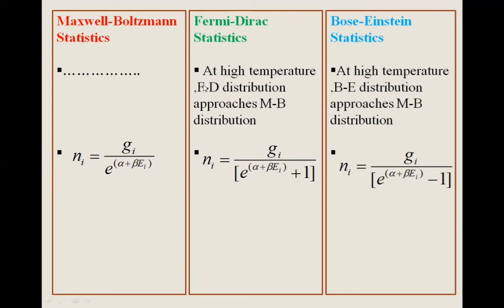At high temperature, the Fermi-Dirac distribution approaches the Maxwell-Boltzmann distribution. Similarly, at high temperature the Bose-Einstein distribution also approaches the Maxwell-Boltzmann distribution.